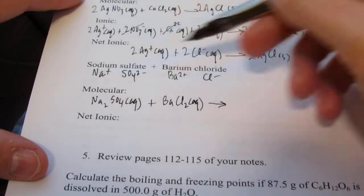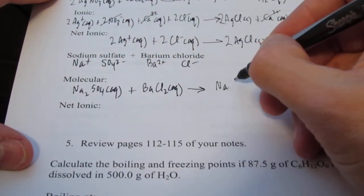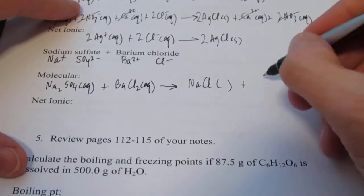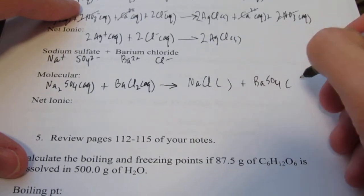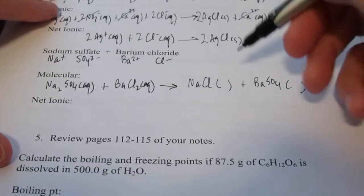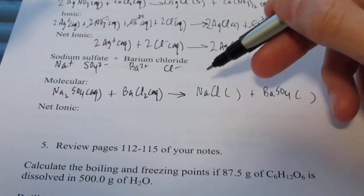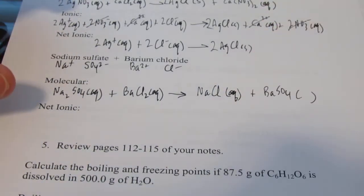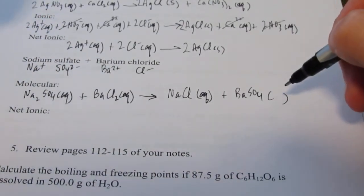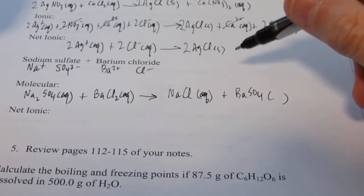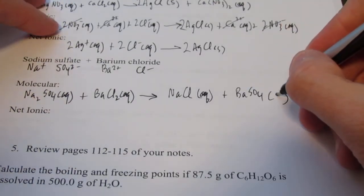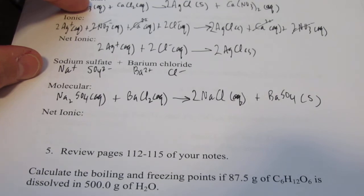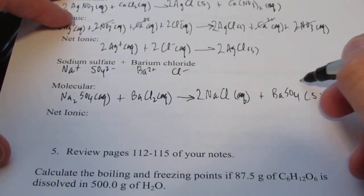Double replacement, so sodium and chloride will get together: Na+ and Cl- forms NaCl. Ba2+ and SO4 2- get together to form BaSO4. Let's use our solubility rules. This has sodium in it, and every ionic compound that has a group 1 ion in it is always soluble, no exceptions, so that's aq. Sulfates are mostly soluble except for silver, mercury, lead, calcium, strontium, and our friend barium, so that's a solid. To balance this, we'll put a 2 in front of NaCl. That's my molecular and it's balanced.